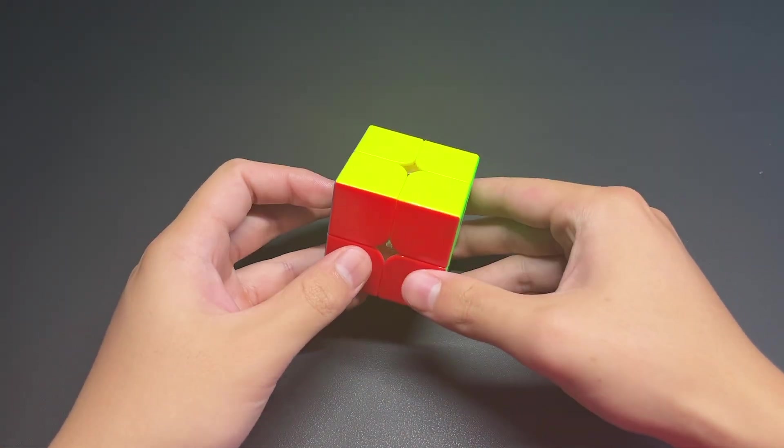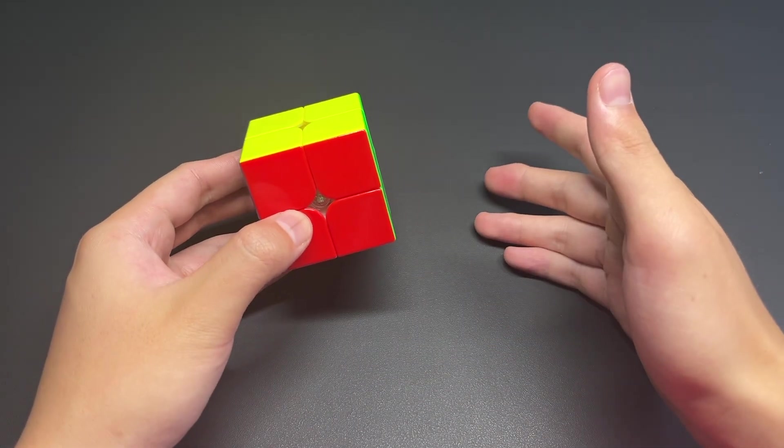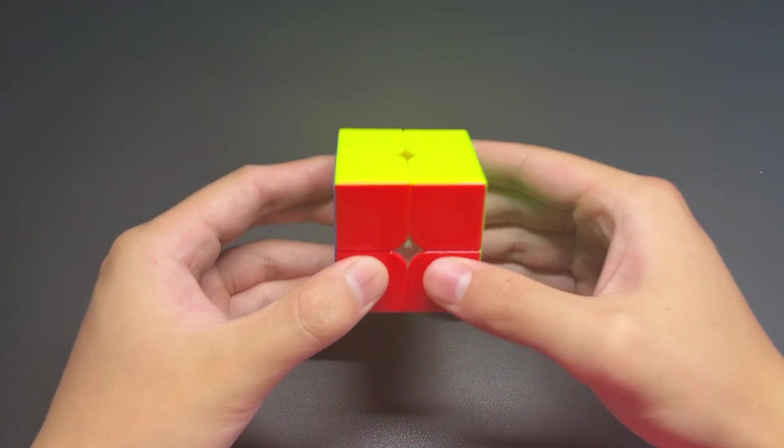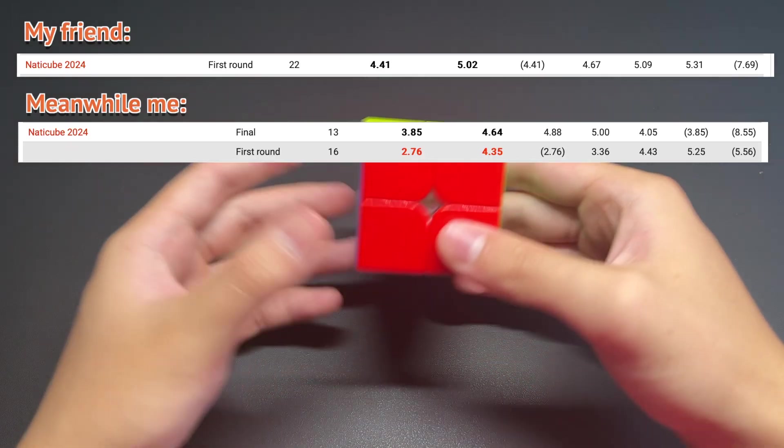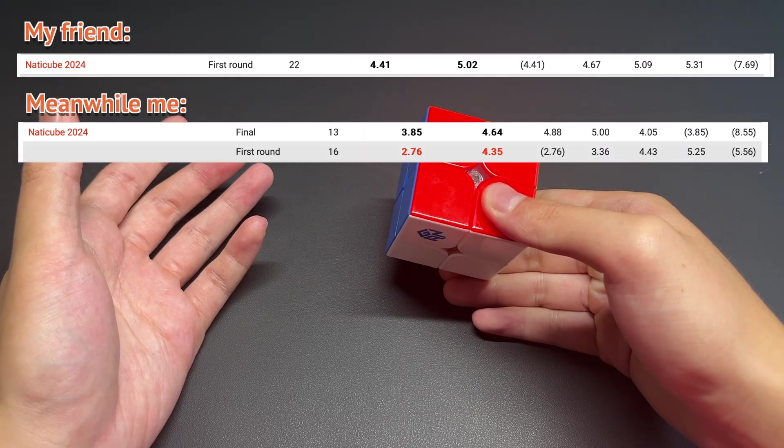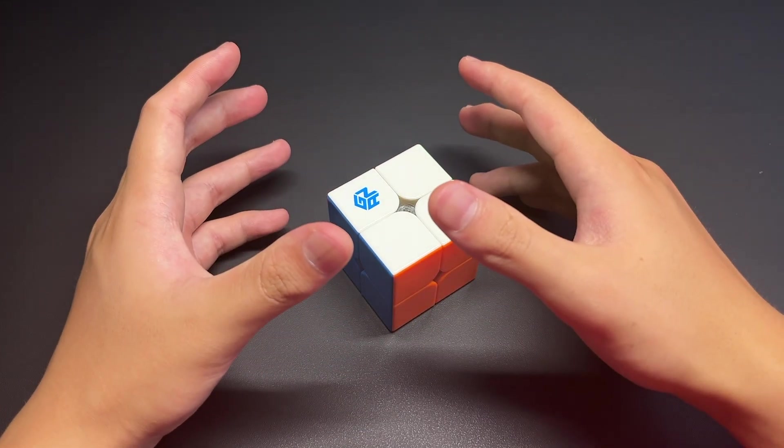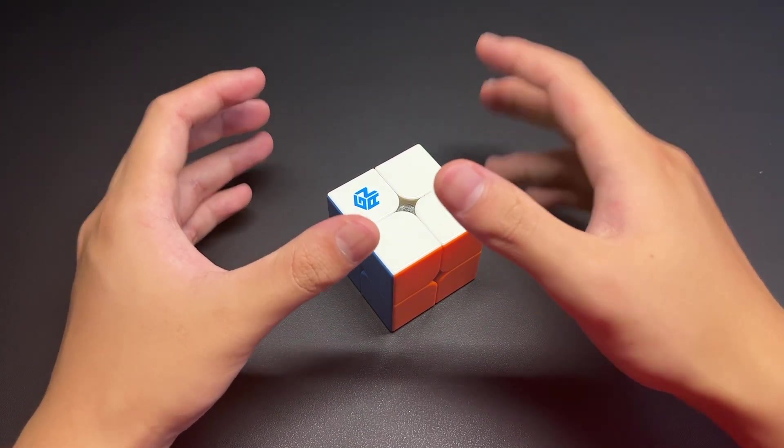So some of you might be like, okay Daniel, how is that even possible? How do you even solve the 2x2 with the beginner's method, the slowest method, in under 5 seconds? Well, personally, I've been able to do it. I've been able to do it at many competitions and my friends who use more advanced methods or even 2-look-to-solve or 1-look-to-solve can't even achieve sub 5. I'll do a quick AO5 right here for demonstration and show you that this is actually possible.